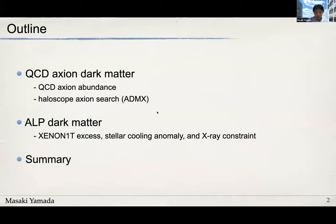Since this is the first talk in the axion session, I will give an overview of the QCD axion dark matter. Then in the second part of my talk, I will explain how the XENON1T excess can be explained by an anomaly-free ALP dark matter. Interestingly, we can also explain the star cooling anomaly simultaneously in this model.